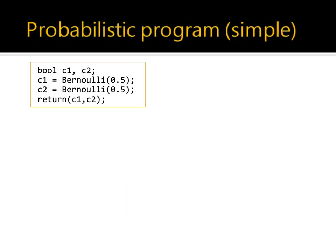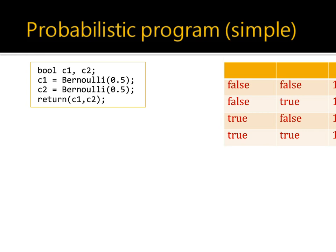Here is an example of a very simple probabilistic program. This program has two Boolean variables, C1 and C2. C1 gets its value true or false from a fair coin toss — a Bernoulli distribution with mean 0.5. Similarly, C2 gets its value from another coin toss. The program returns the tuple C1, C2, and the meaning is the distribution over this return expression — the joint distribution of C1, C2 — which is the uniform distribution over the four choices shown in the table.